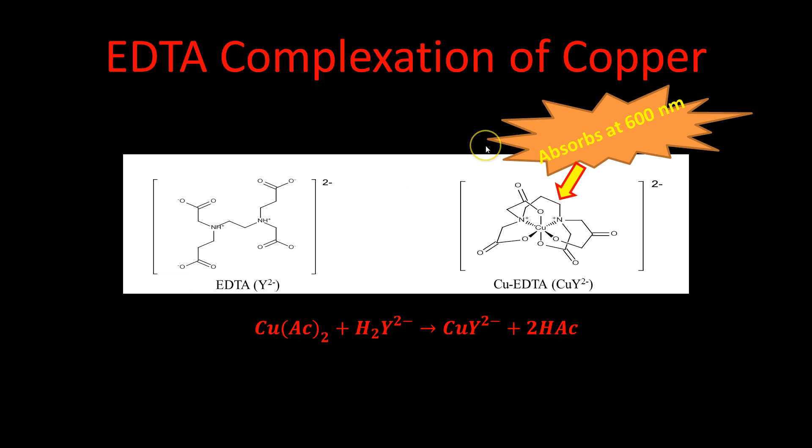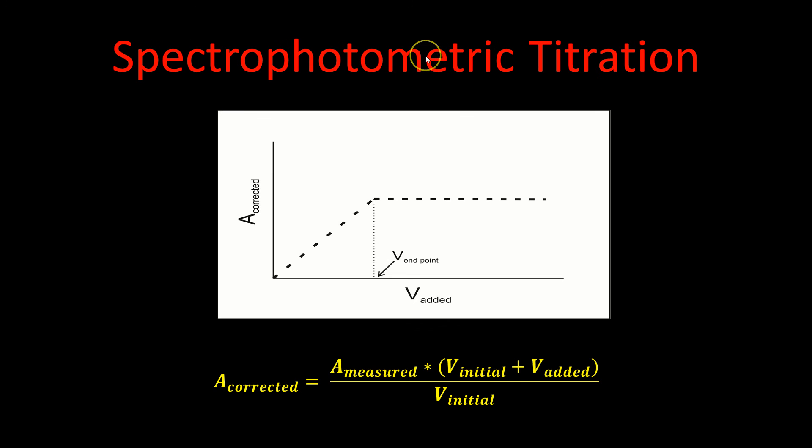The nice thing about this is that when it's bound to copper, this bound complex absorbs strongly at 600 nanometers. You can watch this complex form using a spectrometer, and you guys are going to do that in class. What's even nicer is that the unbound form does not absorb at 600. That way we can detect as this complex forms.